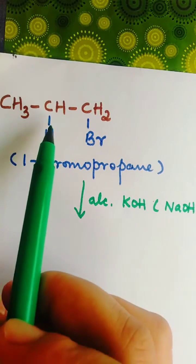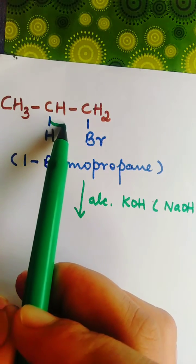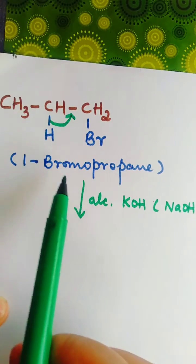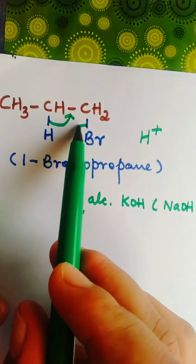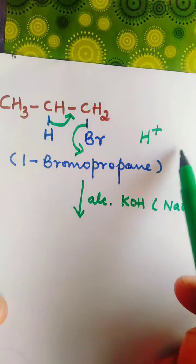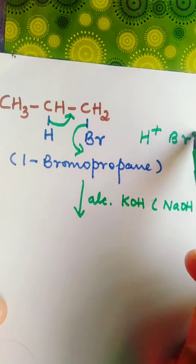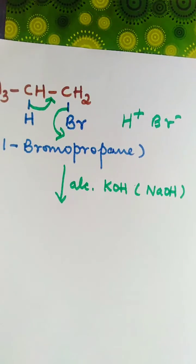You will see that these electrons form a bond here, and so we have H+. This one goes out as Br-. And also,